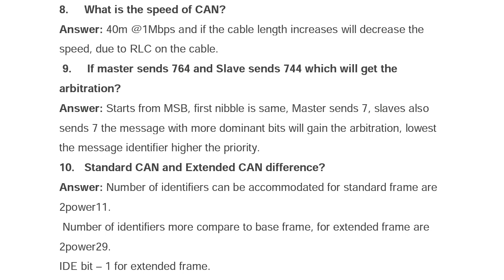If master sends 764 and slave sends 744, which will get the arbitration? It starts from the MSB, the most significant bit. The first nibble is the same — master sends 7, slave also sends 7. The message with more dominant bits will gain the arbitration; the lowest message identifier has the higher priority.